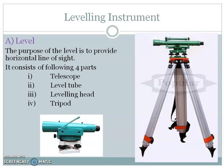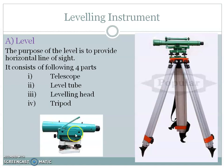The telescope is provided to give the line of sight — we sight the object using the telescope. The level tube makes the line of sight horizontal; this instrument should be exactly horizontal, so the level tube mounted on it is used to achieve a perfectly horizontal line of sight. The leveling head is used to bring the bubble to the center of its run, leveling the tripod. The instrument is mounted on a tripod, and the leveling head is used to level it. The tripod supports the entire instrument.